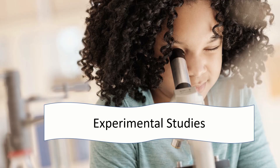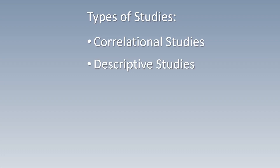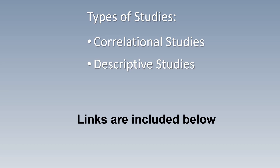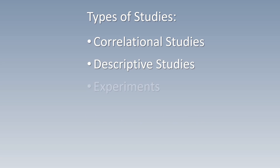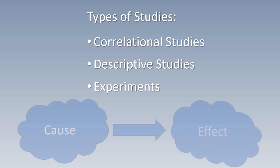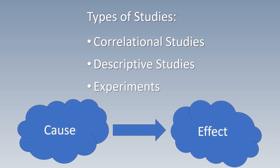Hi everybody. In earlier videos, I talked about two of the three main types of studies done in psychology — descriptive studies and correlational studies. Today, we're going to talk about the third type of study, which are experiments. Experiments are important because they are the only type of study that has the ability to show a cause and effect relationship.